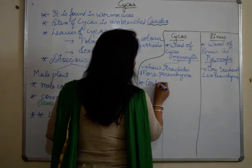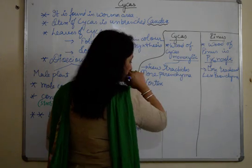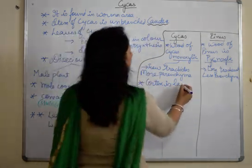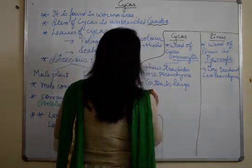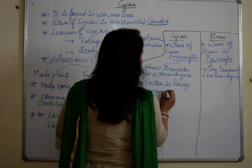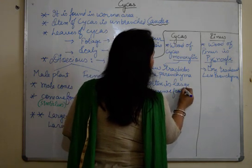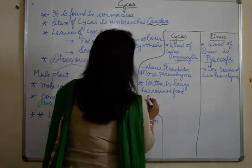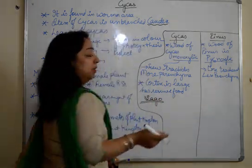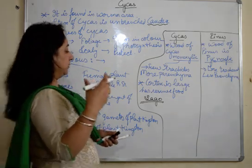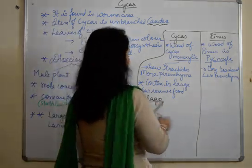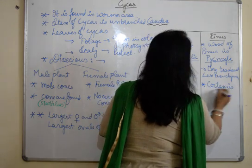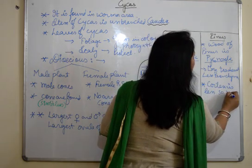The cortex of cycas is large and has reserve food, which forms sago. We have heard about sago — it is a type of sugary food. In pinus, the cortex is less, so there is no reserve food.